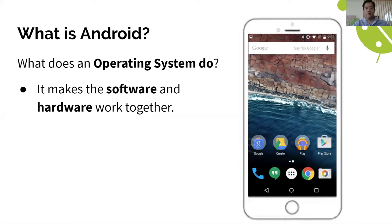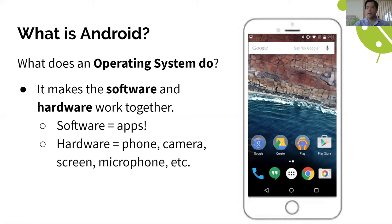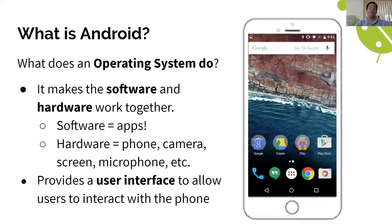The main function of an operating system is to make the software and the hardware work together. The software is the apps — everything you know and love about a phone: Instagram, TikTok, YouTube, Roblox. The hardware is the phone itself — everything you can touch: the screen, the camera, the microphone. Android allows an app like Instagram to use the camera, or YouTube to play video on the screen. It also provides a user interface to allow users to interact with the phone. Without Android on the phone, the phone would be pretty much useless.